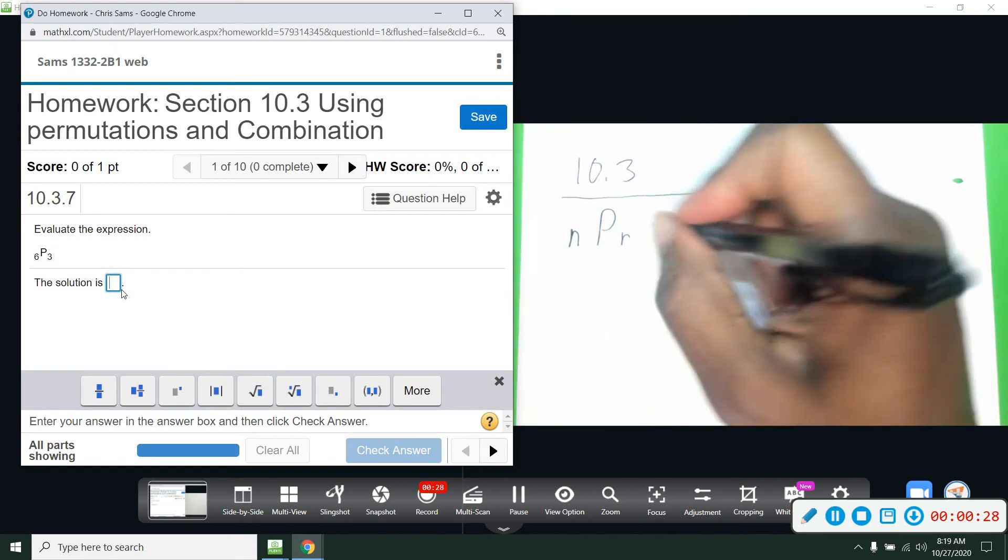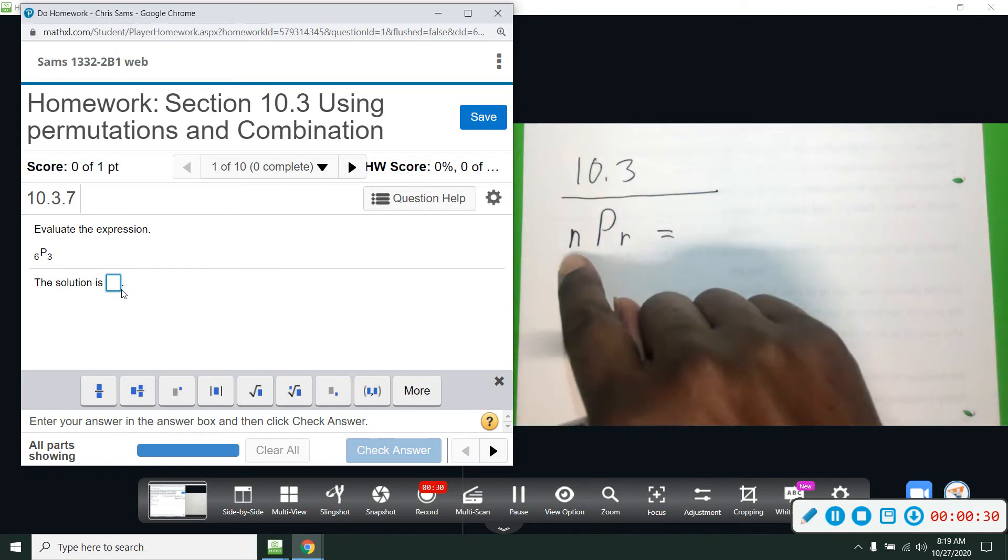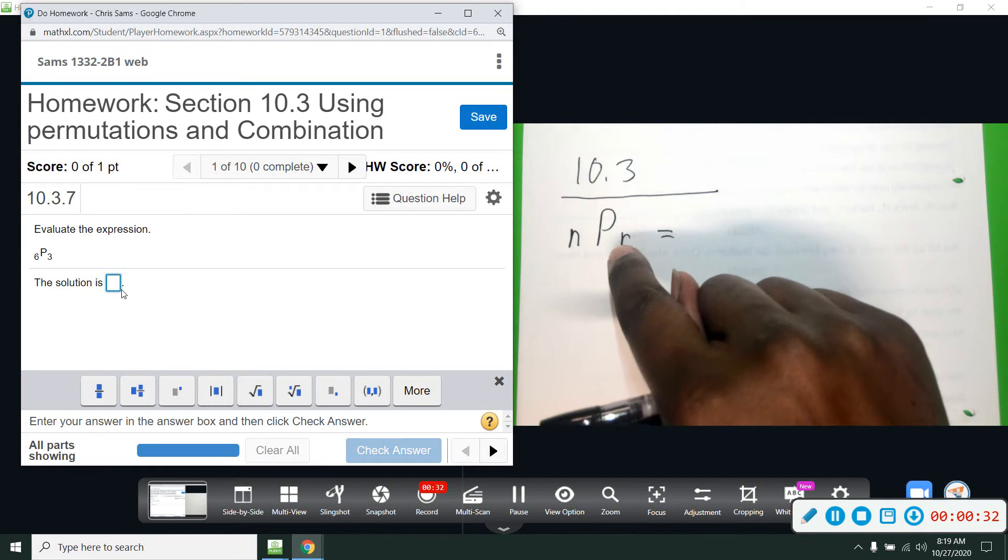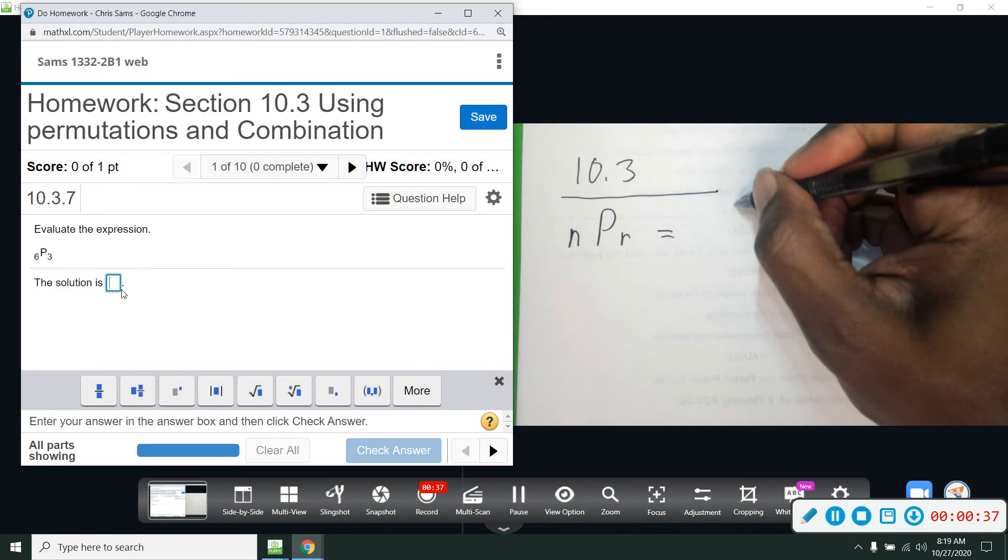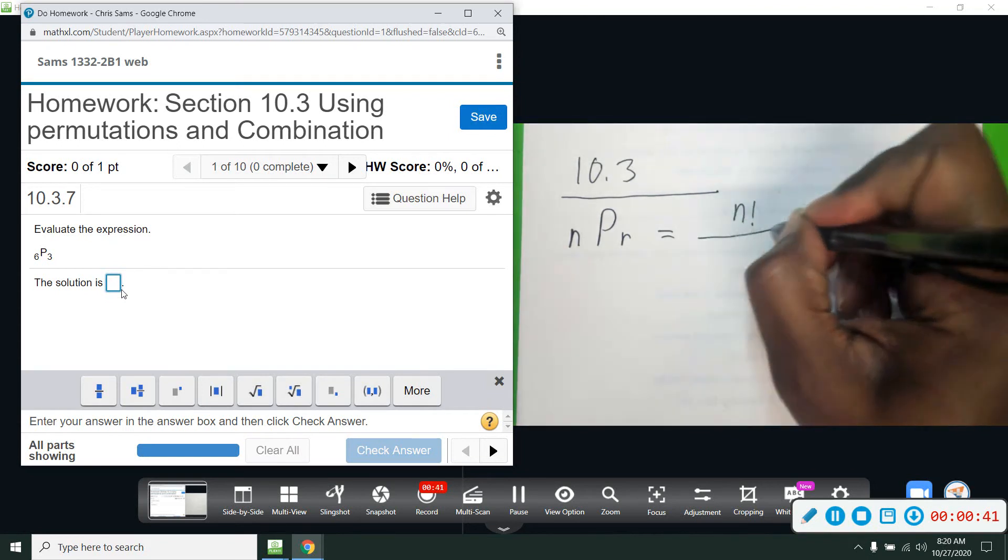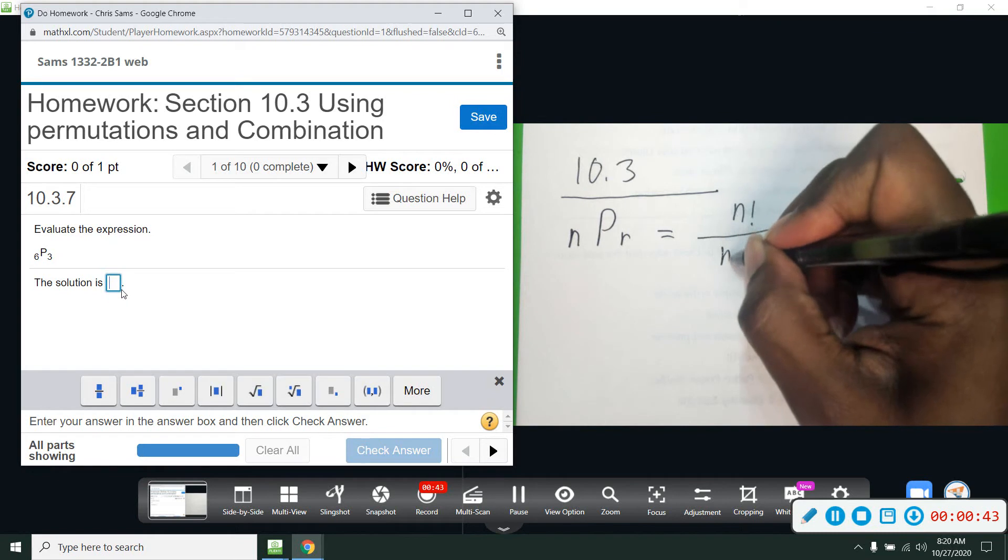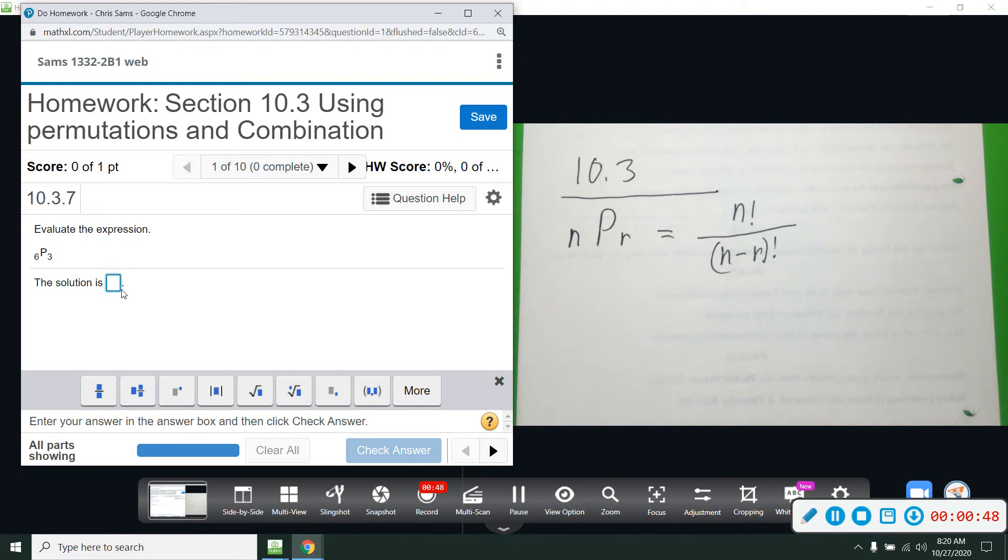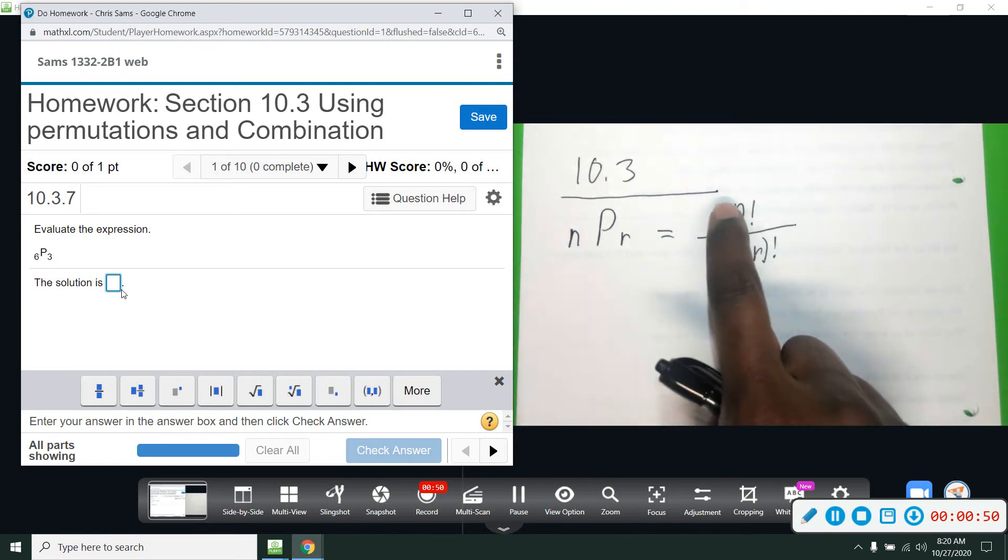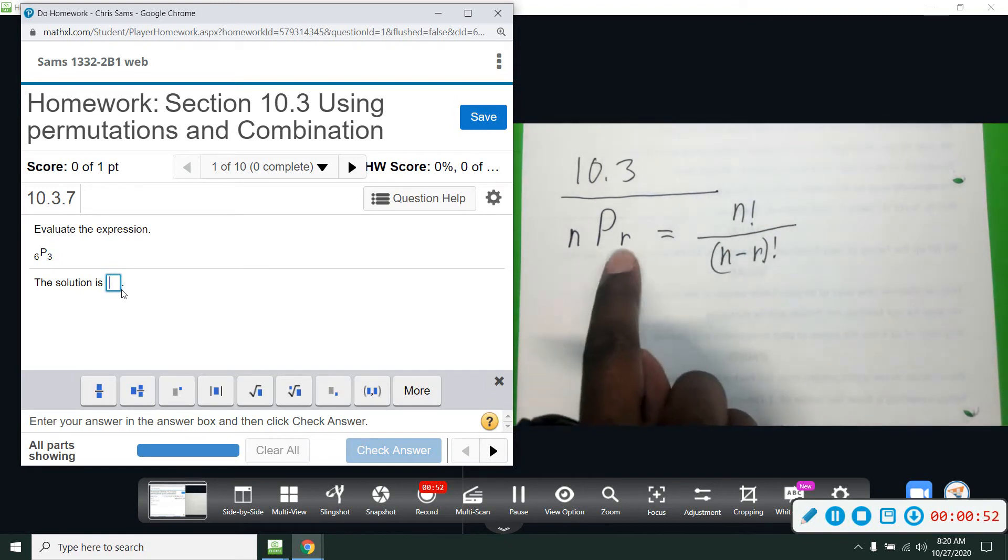This tells you the number of ways if you have n objects and you want to choose r of them. The formula is n factorial divided by (n minus r) factorial. Whatever number is in the front goes on the top factorial, and then subtract the two on the bottom factorial. This tells you how many ways you can take n objects and make groups of r of them when the order is important.